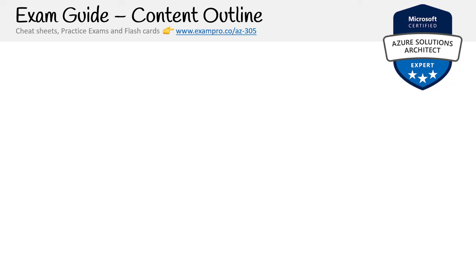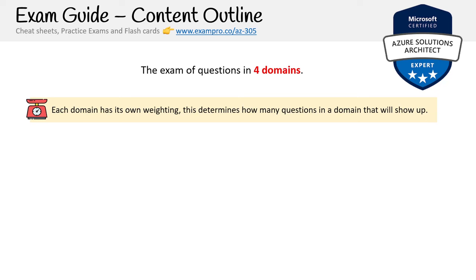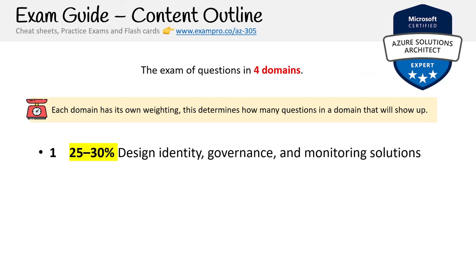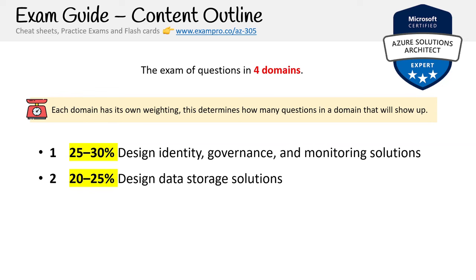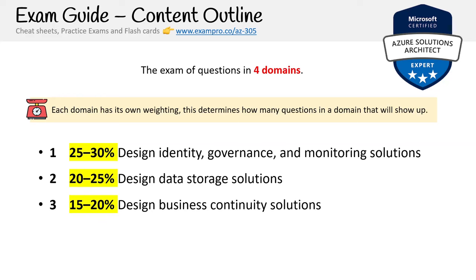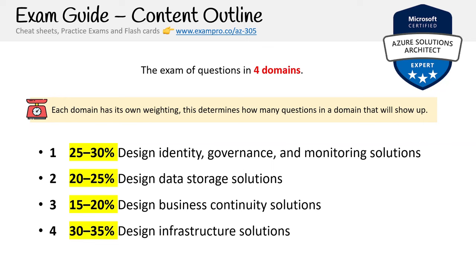In terms of the actual exam guide outline, there are four domains and each domain has its own weighting, which determines how many questions in a domain will show up. Microsoft exams use a range of questions per domain. The first domain is Design Identity, Governance, and Monitoring Solutions at 25 to 30% of the exam. The next is Design Data Storage Solutions at 20 to 25%. Then Design Business Continuity Solutions at 12 to 20%. And finally, Design Infrastructure Solutions at 30 to 35%.